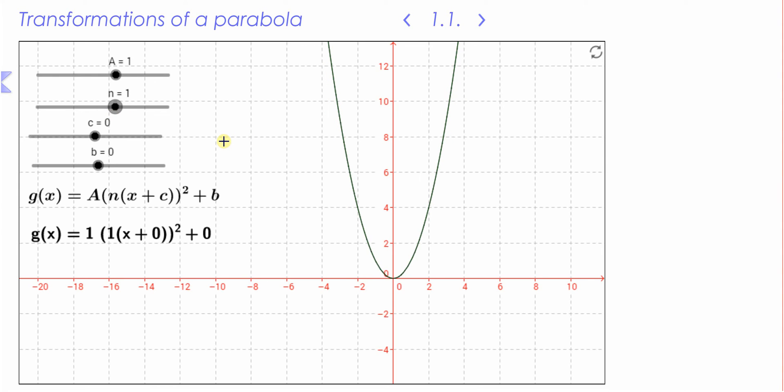Right now on the screen you can see the graph of g(x) = x². What we're going to do to this graph is change certain parameters so that the graph is transformed.